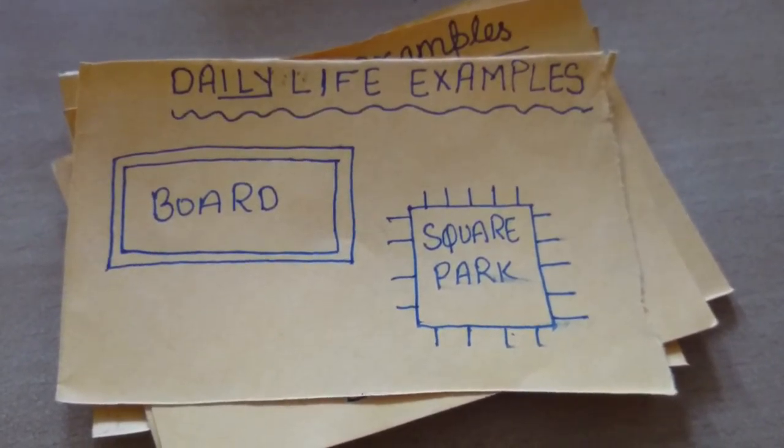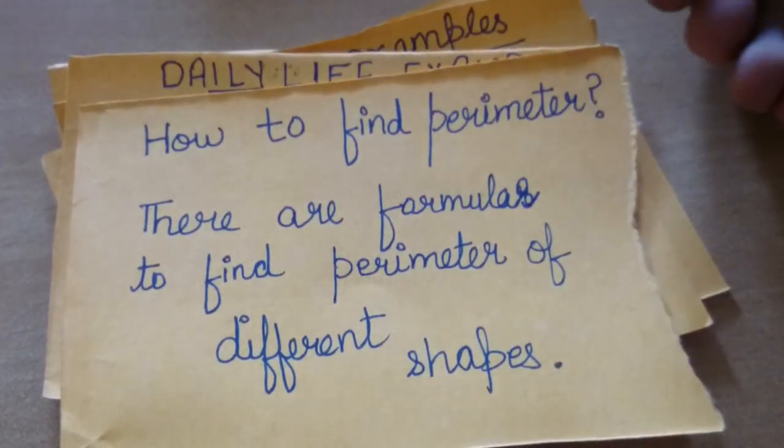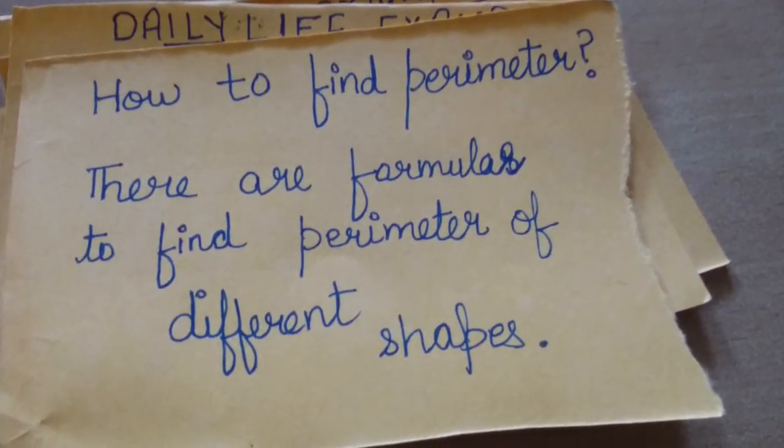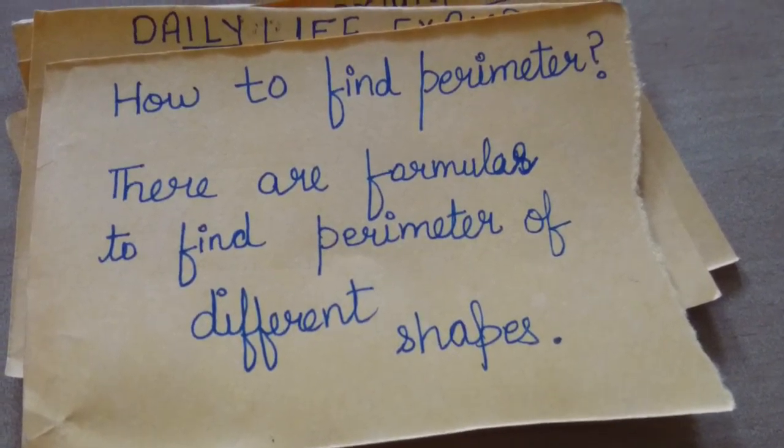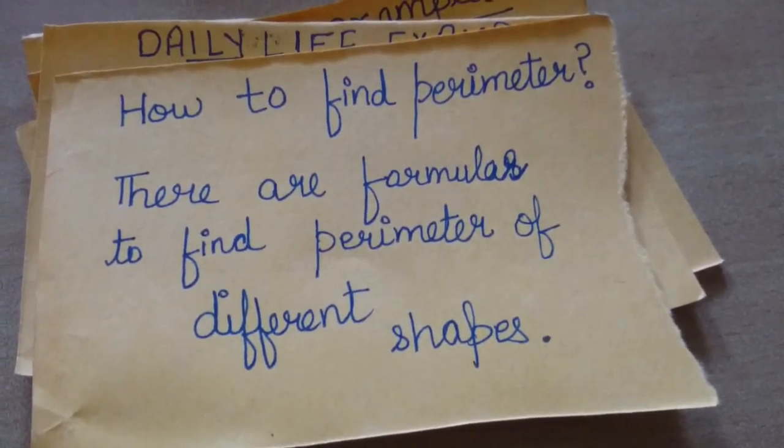Now, the question arises, how to find perimeter? There are formulas to find perimeter of different shapes. Let's take a square.